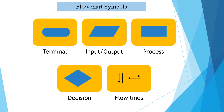The third symbol is a rectangle and it is named as process. This symbol contains all types of arithmetic and assignment tasks — all type of processing operations we write in this process symbol. Any simple arithmetic expression like sum = n1 + n2, or area = pi * r squared, or whatever — these types of plain processing statements we can write here.